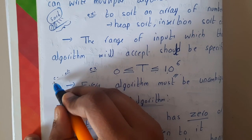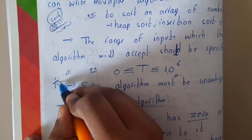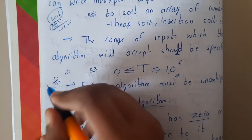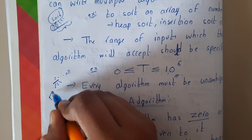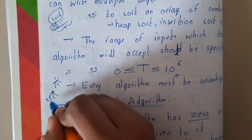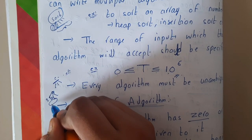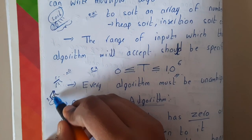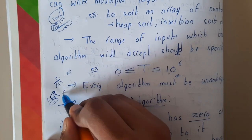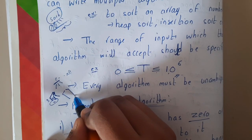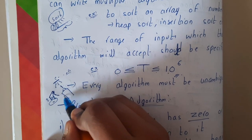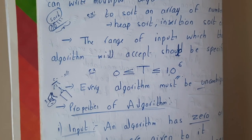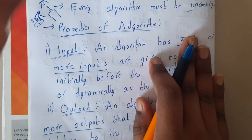Every algorithm must be unambiguous. For example, if you wrote an even/odd algorithm but wrote multiple paths — dividing by three, dividing by two, and then deciding — there should not be multiple paths. There should be only a single path: if it is even it goes this way, if it is odd it goes that way. You write a condition and the flow follows it. The algorithm should be 100% unambiguous and 100% clear.